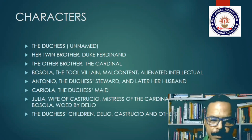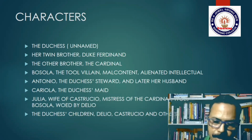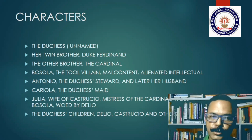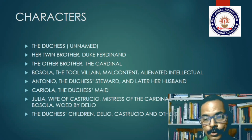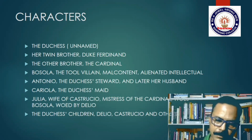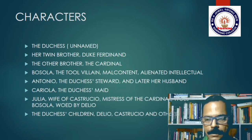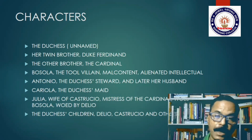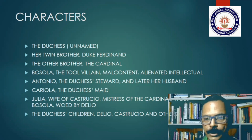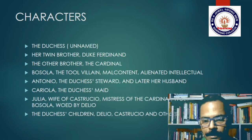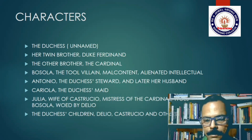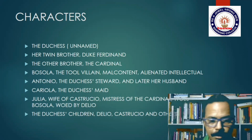Coming to the characters: the title role is played by the Duchess herself, who remains unnamed. We know her as the Duchess of Malfi, and close to her death she says, 'I am Duchess of Malfi still.' Then there is her twin brother, Duke Ferdinand, and the other brother, the Cardinal. Another important character, almost at par with the Duchess, is Bosola, the tool villain of the play. He conforms to the malcontent mold, a stock character who rails against the very things he desires. Bosola is an alienated intellectual — a scholar who has found no proper employment and feels he does not belong to society.